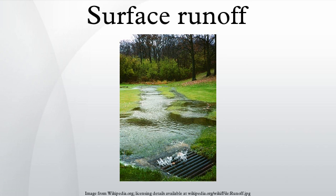When anthropogenic contaminants are dissolved or suspended in runoff, the human impact is expanded to create water pollution. This pollutant load can reach various receiving waters such as streams, rivers, lakes, estuaries, and oceans, with resultant water chemistry changes to these water systems and their related ecosystems. A 2008 report by the United States National Research Council identified urban stormwater as a leading source of water quality problems in the US.